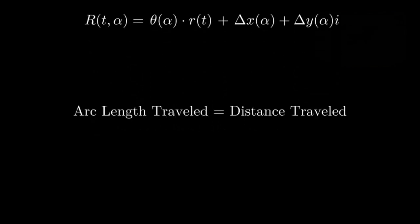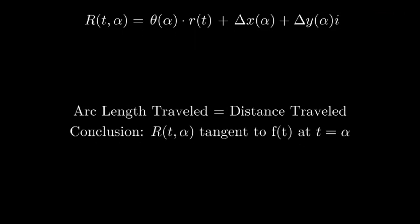Since the total arc length traveled by the rolling curve must be equal to the total distance traveled, we know that the point of tangency occurs when t equals alpha. We can use this information to solve for the translation term in our formula for big R.